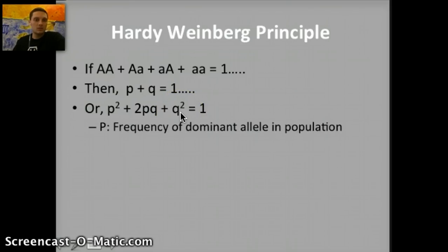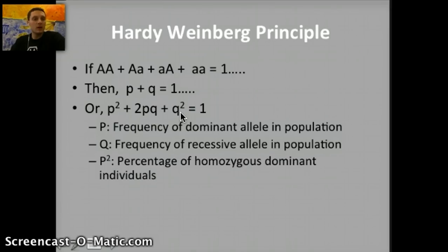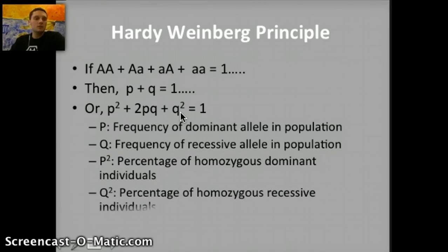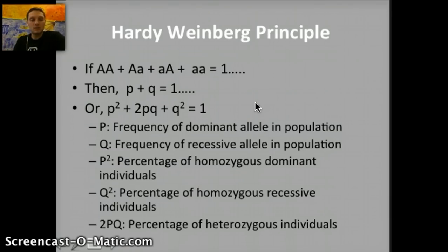P is the frequency of the dominant allele in the population, and Q is the frequency of the recessive allele. Therefore, P² is the percentage of homozygous dominant individuals, Q² is the percentage of homozygous recessive individuals, and 2PQ is the percent of heterozygous individuals. We can use this to calculate allele frequencies and look at changes over generations.